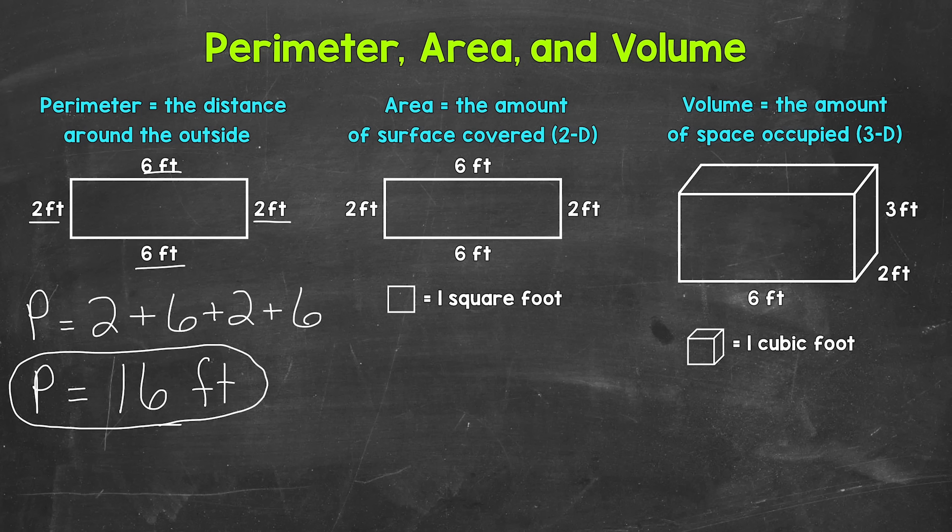So the perimeter of this rectangle — the distance around the outside — is 16 feet. And that's it for perimeter. Just remember, perimeter is the distance around the outside of a shape or figure, and we can find the perimeter by adding the lengths of all of the sides.